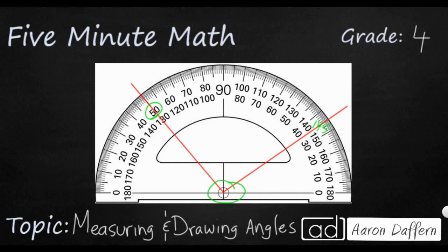If I wanted to find the measure of this angle, I would simply subtract the larger from the smaller. So 145 minus 50 is going to be 95. So it's an obtuse angle because it's just barely above 90. Anything that is greater than 90 is obtuse.